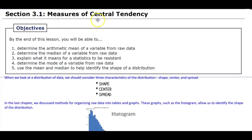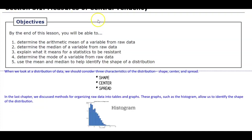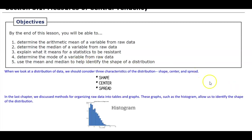Section 3.1: Measures of Central Tendency. By the end of this lesson you're going to be able to determine the arithmetic mean of a variable from raw data, determine the median of a variable from raw data, explain what it means for a statistic to be resistant, determine the mode of a variable from raw data, and use the mean and median to help identify the shape of the distribution.